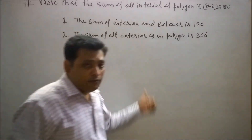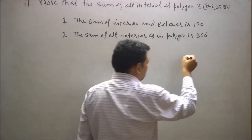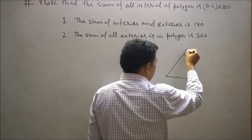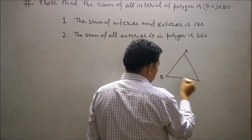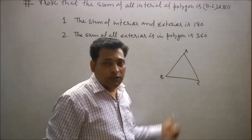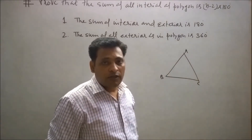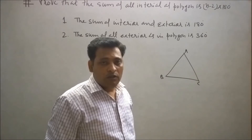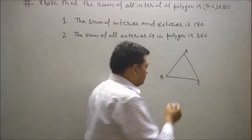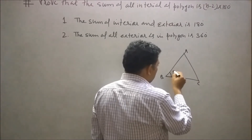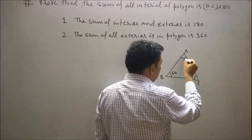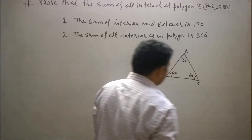We can observe these two facts with an example. If we take a polygon with three sides, it will be an equilateral triangle. In an equilateral triangle, all three sides are equal and all three angles are 60 degrees each.